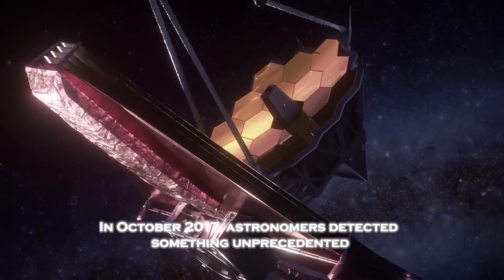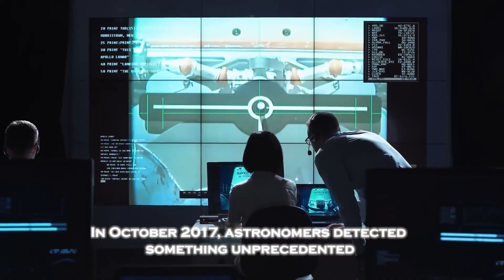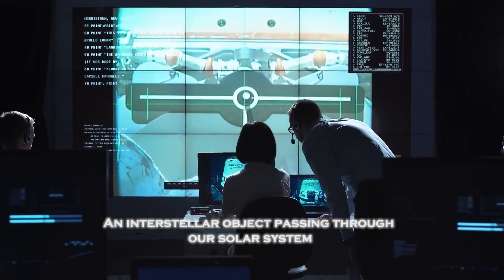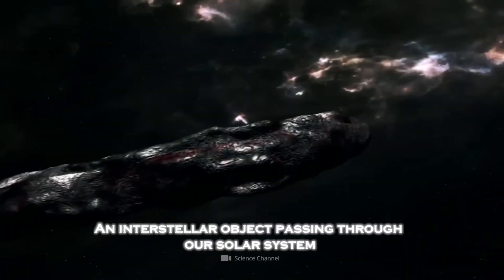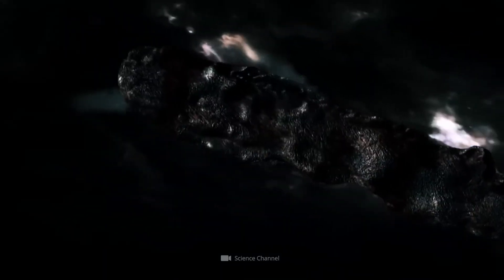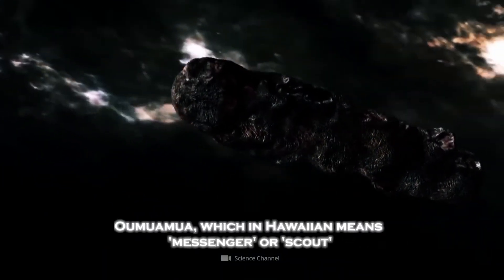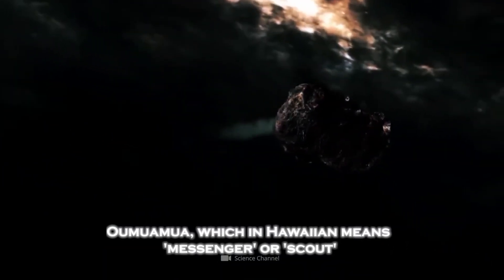In October 2017, astronomers detected something unprecedented, an interstellar object passing through our solar system. They named it Oumuamua, which in Hawaiian means messenger or scout.